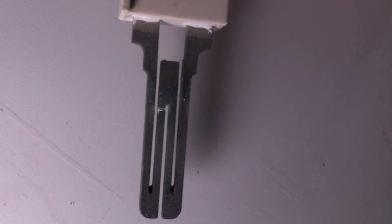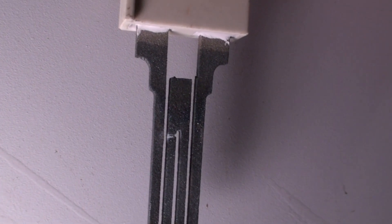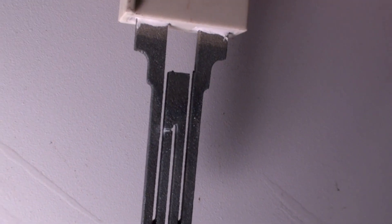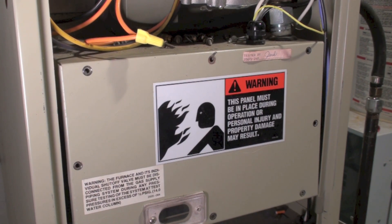Now I pull the hot surface igniter out. If you look real close, you'll see that little white spot. That means the hot surface igniter is open, and that is your problem. I'll show you where it's at.